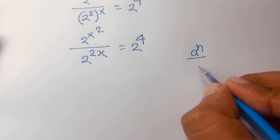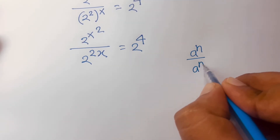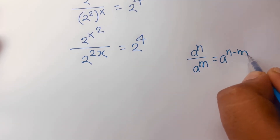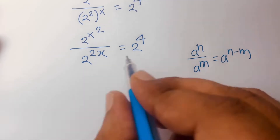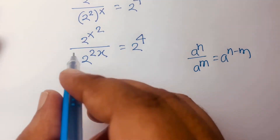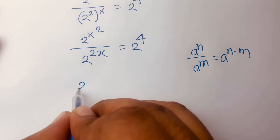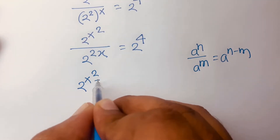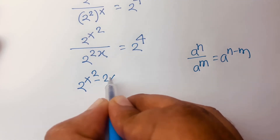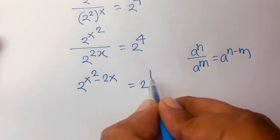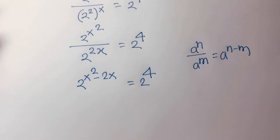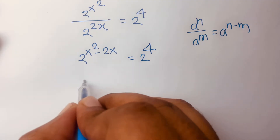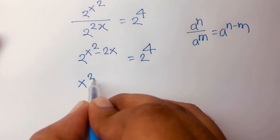According to exponential rules, we know that a to the power n over a to the power m is equal to a to the power n minus m. According to this rule, since the bases are the same, it will be 2 to the power x squared minus 2x is equal to 2 to the power 4.